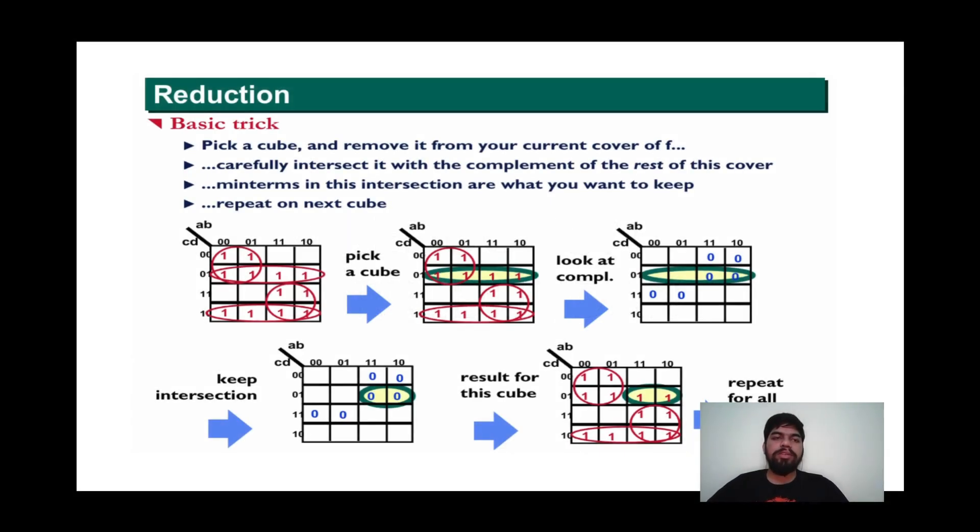Now reduction in Espresso heuristic minimization algorithm. Reduction is performed using this basic trick. First of all, we pick a cube and remove it from the current cover. Then carefully intersect it with the complement of the rest of the cover. In the next step, we take the intersection, and the intersection part is kept for the next step. This step is repeated many times for the next cube until we get a reduced term.